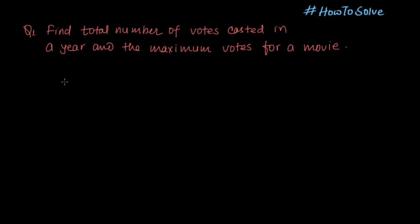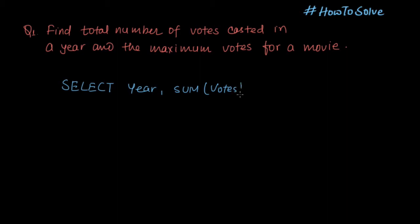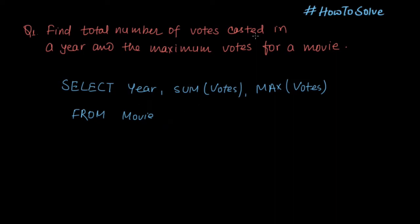So what we will do is first SELECT year, then we need to find out total votes casted — we will use SUM — and we also need to find out the maximum vote for a movie, so we will use MAX from movie. As we want to get the total votes and the maximum vote per year, we need to GROUP BY year.